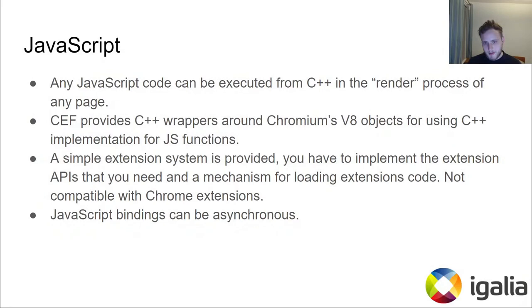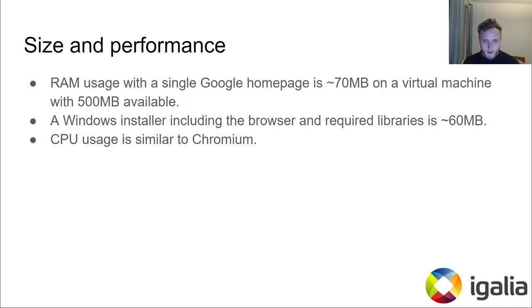JavaScript bindings can be asynchronous, which allows your render process to communicate with other processes while the JavaScript function caller is waiting for a result. For example, that is useful for doing any I/O operations, since the render process is not allowed to do any I/O.